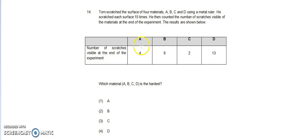So material A gave four scratches at the end of the experiment. Material B gave nine. Material C gave only two scratches while material D gives 13 scratches. So let us take a look at this.